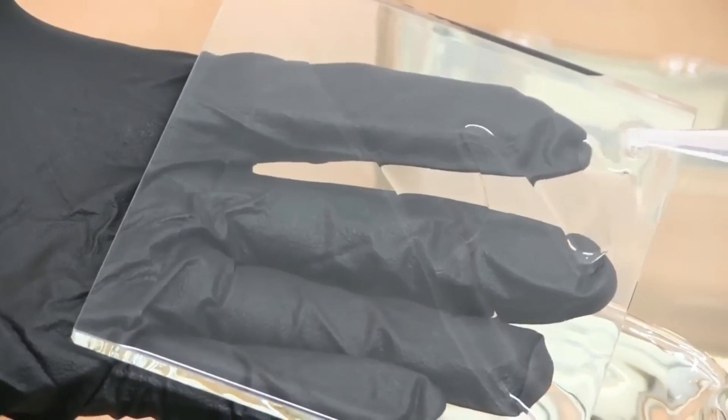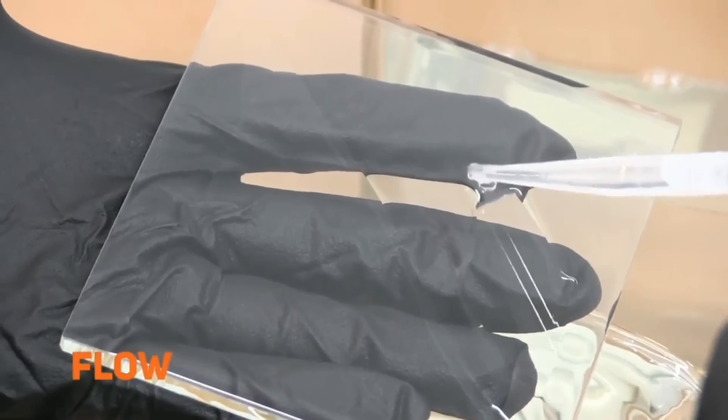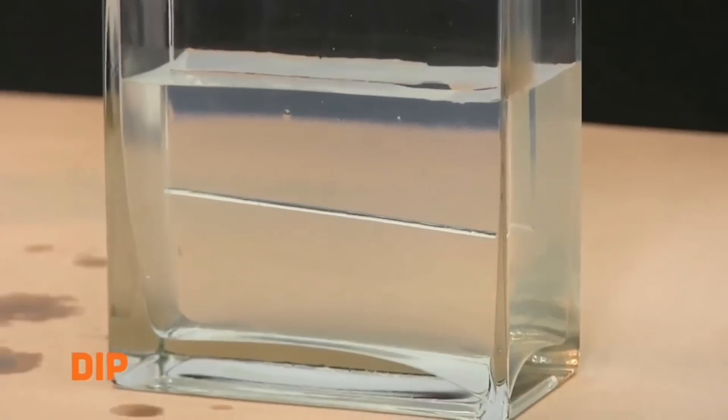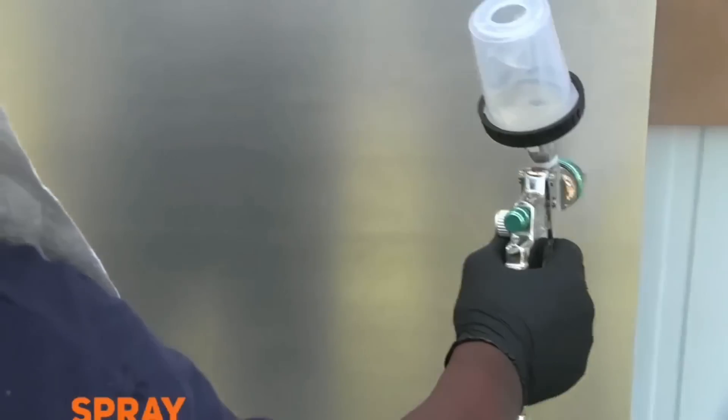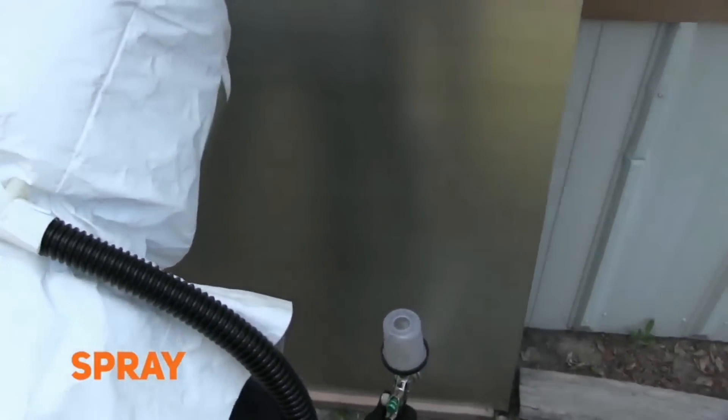Gentoo can be applied in one of four ways: flow, dip, brush and spray. Each has its own advantages and is dependent on the object being coated, the environment and several other factors.